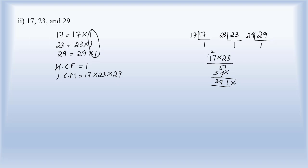So 391 into again we have to multiply 29. So multiplying 9 first. 9×1 is 9. 9×9 is 81. 9×3 is 27. 27+8 is 35. So it is 35 into 2. 2×1 is 2. 2×9 is 18 carry 1. 2×3 is 6, plus 1 it is 7. So adding these, 9, 2+1 is 3. 5+8 it is 13 carry 1. 7+3 is 10 and this is 11. So LCM for the integers 17, 23 and 29 is 11,339. So this is the LCM and 1 is the HCF.